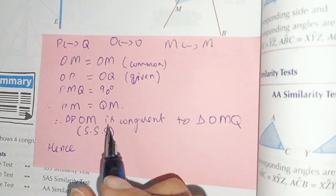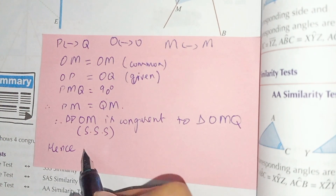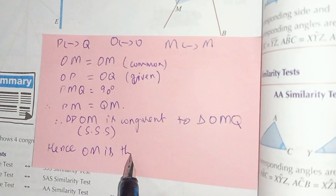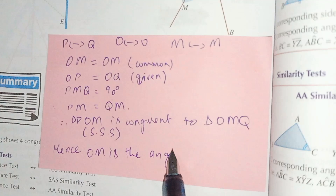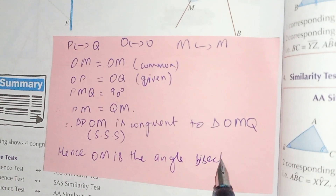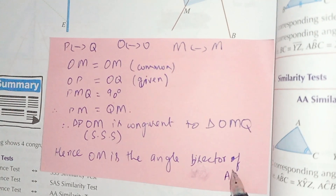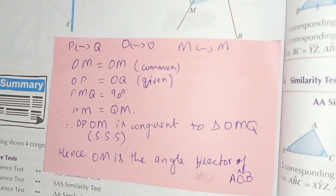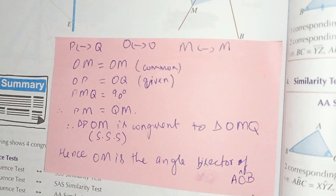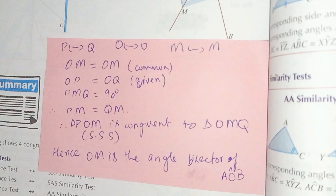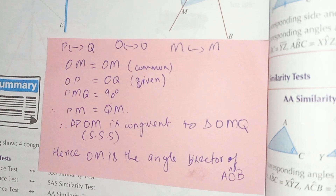This proves that both triangles are congruent, and therefore OM is the angle bisector of angle AOB. Question number seven is solved and the exercise is complete. I hope you understand this exercise very well. Thank you very much for watching. Take care of yourself.